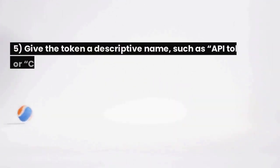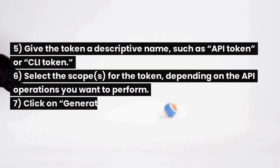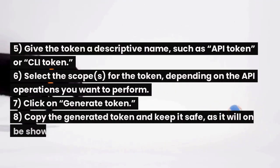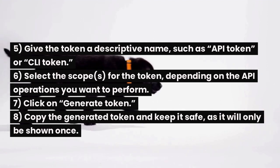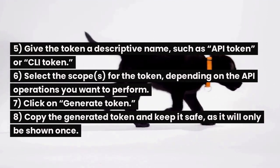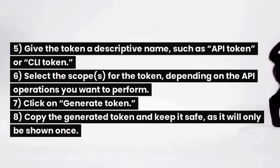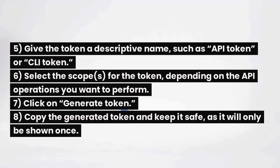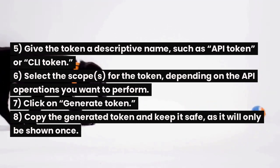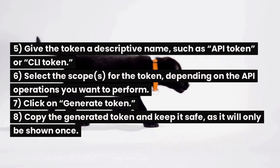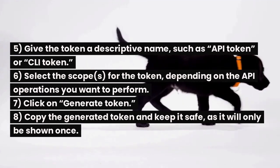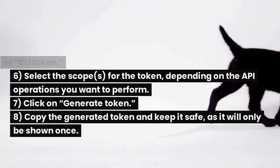5. Give the token a descriptive name, such as API token or CLI token. 6. Select the scopes for the token, depending on the API operations you want to perform. 7. Click on Generate Token. 8. Copy the generated token and keep it safe, as it will only be shown once.